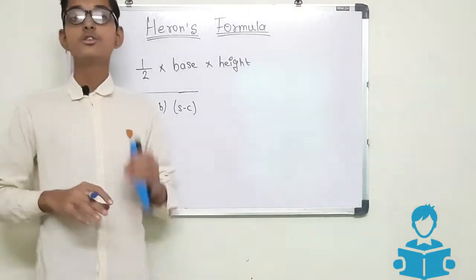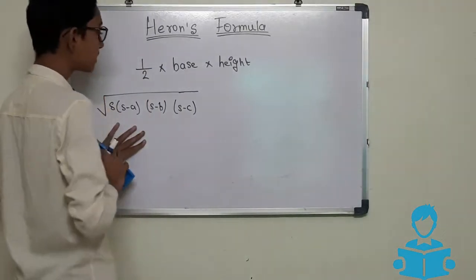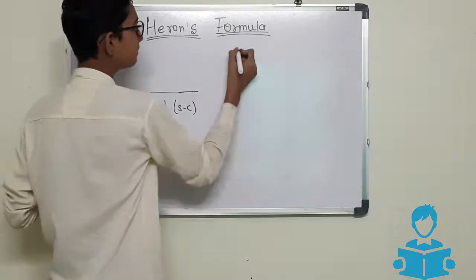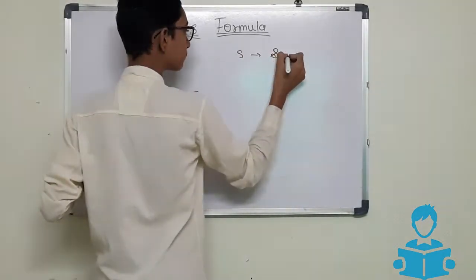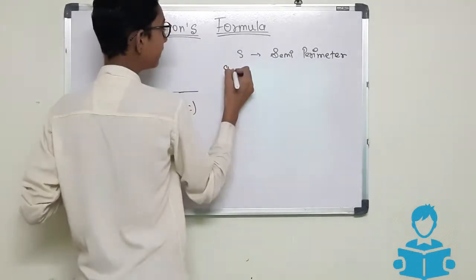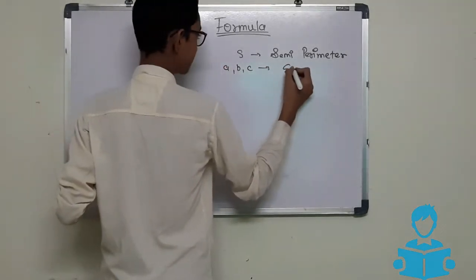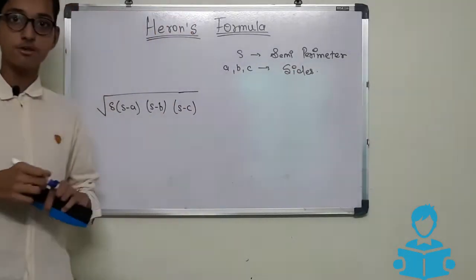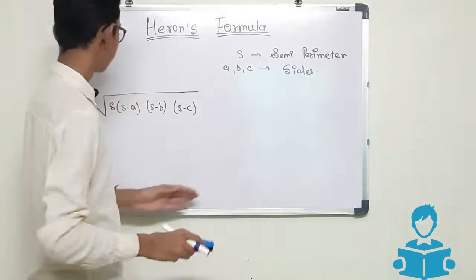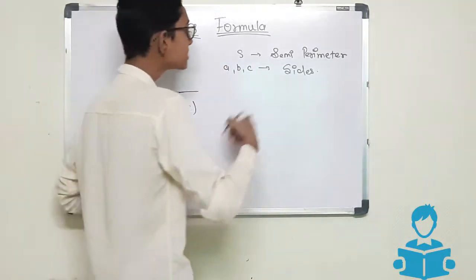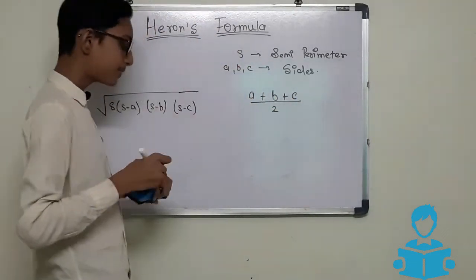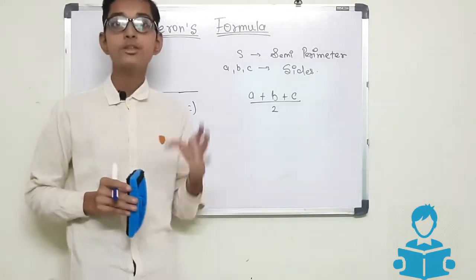This is the area of triangle and this is known as Heron's formula. To find the area of a triangle we have to use this formula, not the half base height formula. In this formula, s is the semi-perimeter, and a, b, and c are the sides of the triangle. For finding semi-perimeter there is also one formula, which is a plus b plus c upon two.